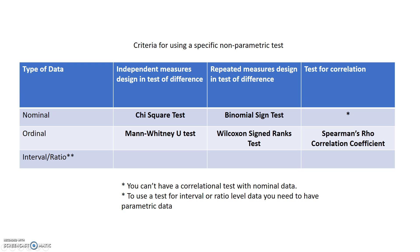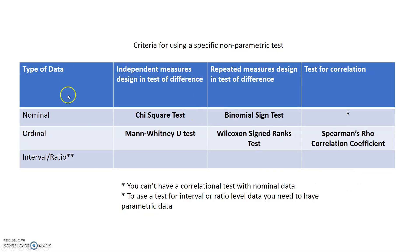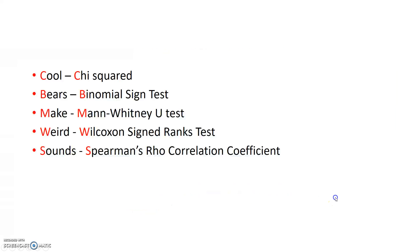This is a really important table — make sure you jot it down and commit it to memory. These are the criteria for using a specific non-parametric test. For independent measures design in a test of difference with nominal data, a chi-squared test is used. For repeated measures and nominal it's binomial, for independent and ordinal it's Mann-Whitney, and for repeated ordinal it's Wilcoxon. For a test of correlation it's always Spearman's Rho correlation coefficient. Note that you can't have a correlational test with nominal data, and to use a test for interval or ratio level data you need parametric data, which we'll look at in a moment.